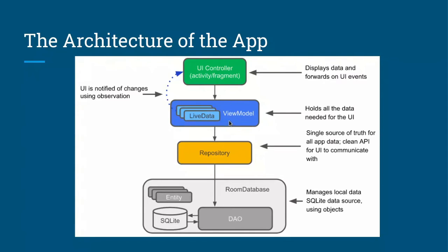The ViewModel holds all the data needed for the UI and is responsible for preparing that data. For example, if we want to display a list, the ViewModel is responsible for preparing it. It then forwards the data to the UI controller using LiveData. LiveData is responsible for observing changes happening, for example, inside the Room Database.